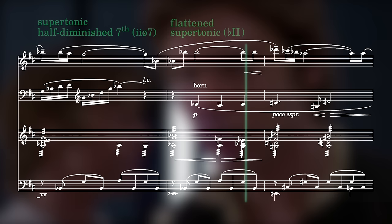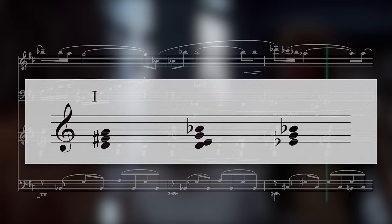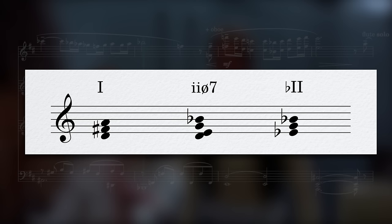These three chords, the tonic, the supertonic half diminished 7th, and the flattened supertonic, combined with the interval of a major 6th, represent for Williams the exotic, love and romance.